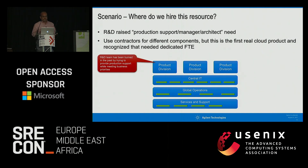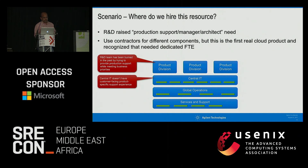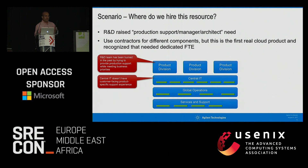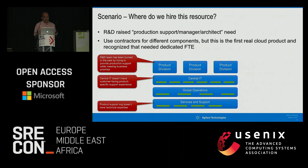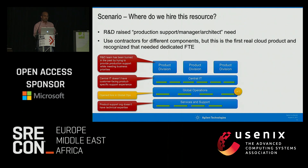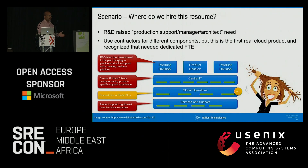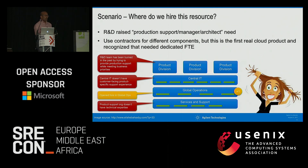But we've been burned in the past — the team trying to provide production support while also building the actual product. Central IT doesn't really have customer-facing product support experience — they deal mostly with internal systems like SAP and the web store. Our traditional support organization is literally field service engineers going to customer sites fixing equipment with wrenches. They don't have this kind of technical expertise either. So the idea was to open this under global ops — which was a nightmare.